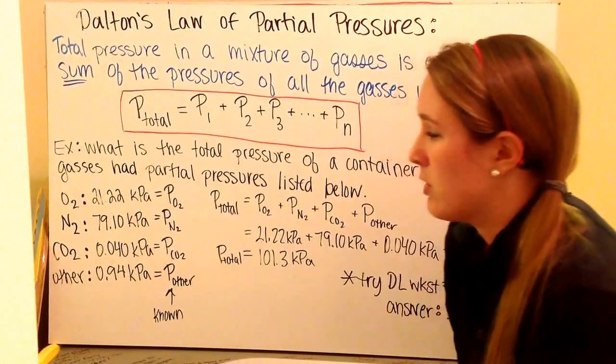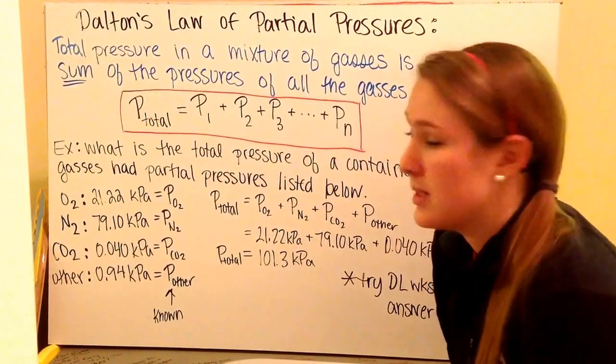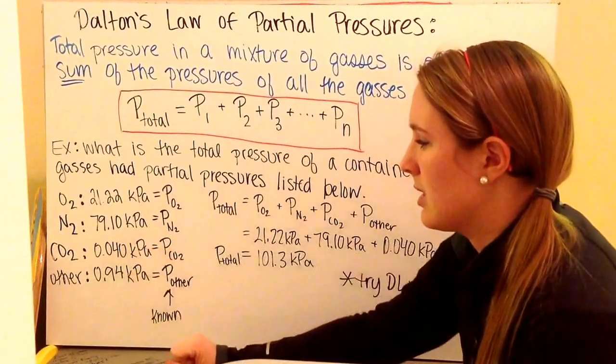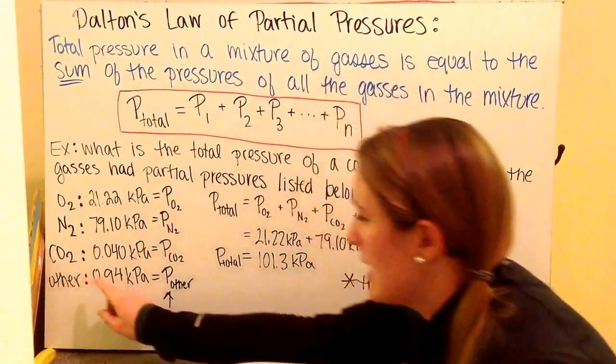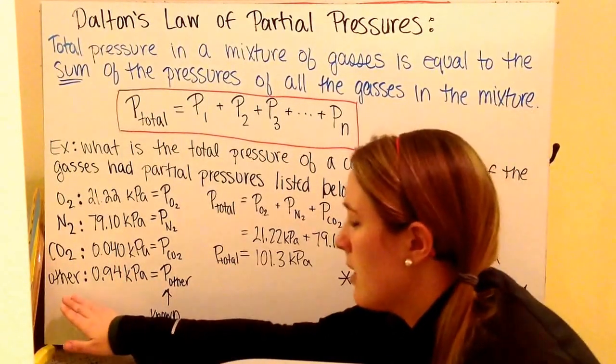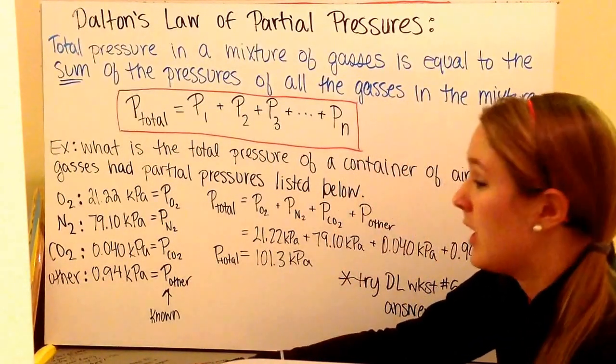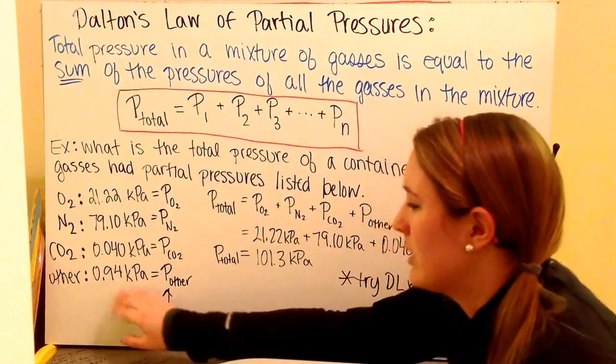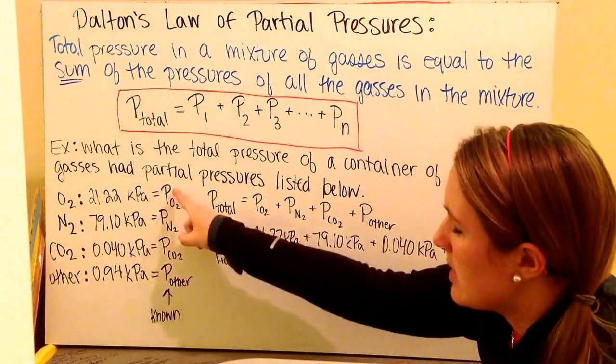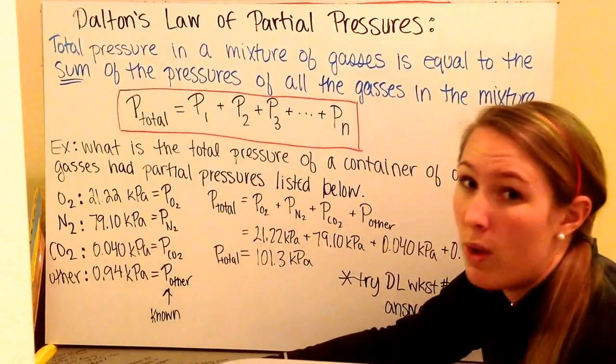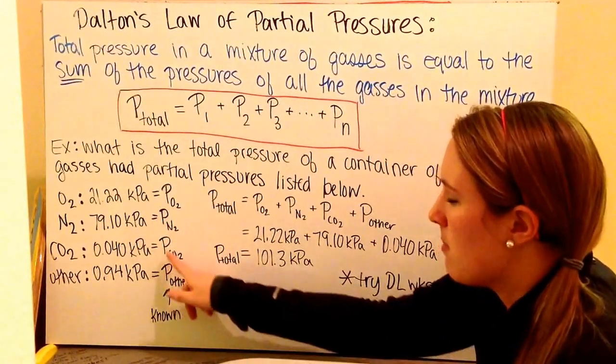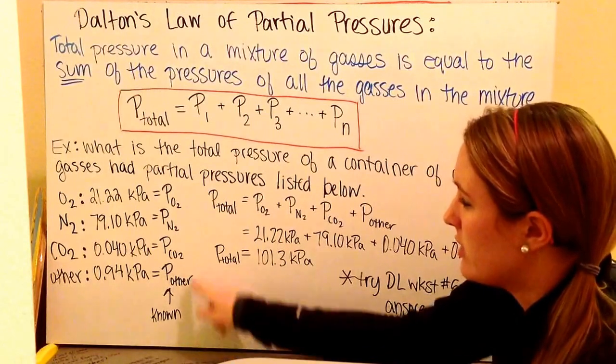Oxygen has a partial pressure of 21.22 kilopascals. Nitrogen has a partial pressure of 79.10 kilopascals. Carbon dioxide has a partial pressure of 0.040 kilopascals. And the other gases within my bottle of air has 0.94 kilopascals. So then I go ahead and I label my partial pressures as P, and then my subscript is going to be what my gas is. So P of O2, P of N2, P of CO2, and P of my other. These are my known values.